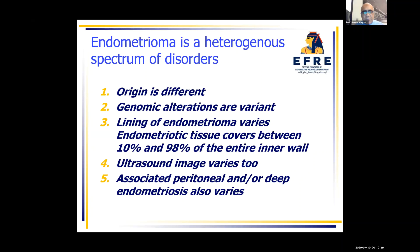The origin is different. Genomic alterations are different. Lining of endometrioma varies — it is occupied by endometrioid tissue in some cases 10%, in some others 90%. Ultrasound images vary also, and associated peritoneal endometriosis also — the incidence varies in different types of endometrioma. So we cannot speak about one endometrioma.